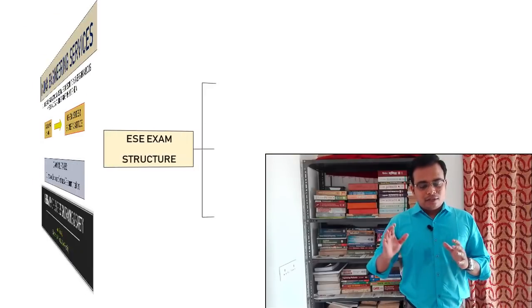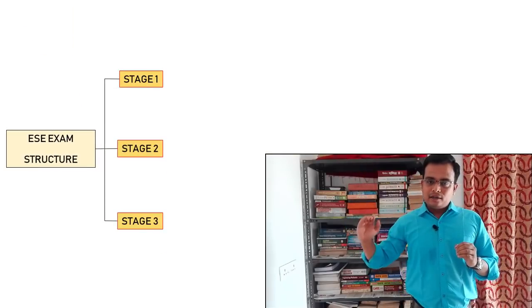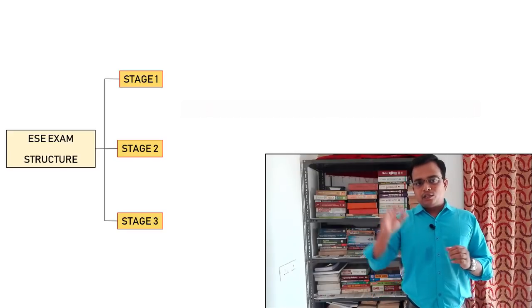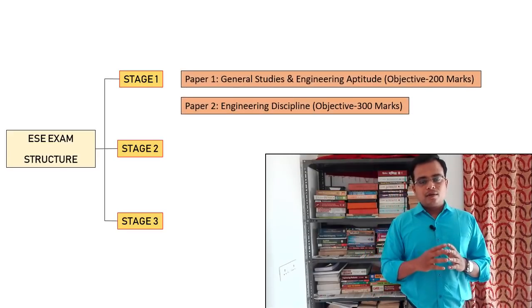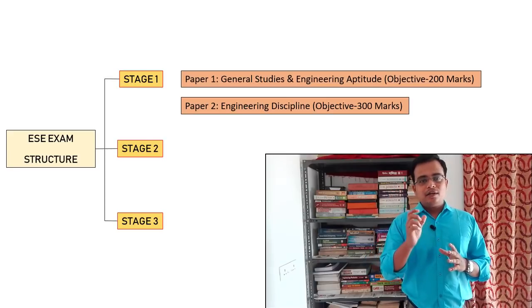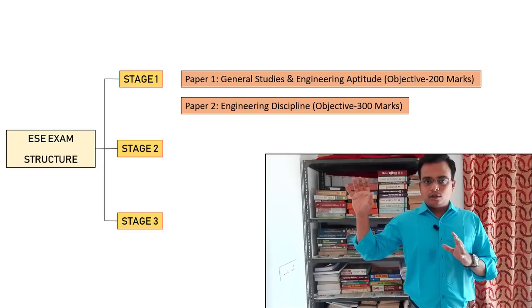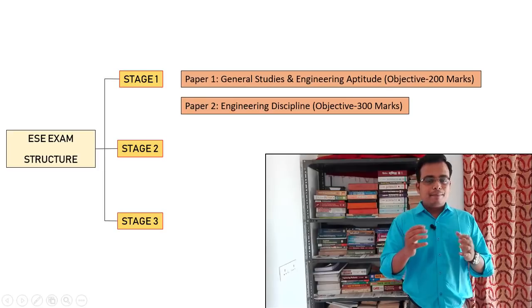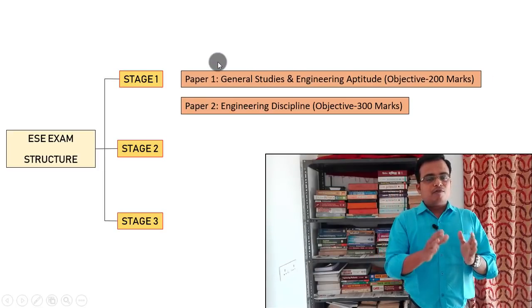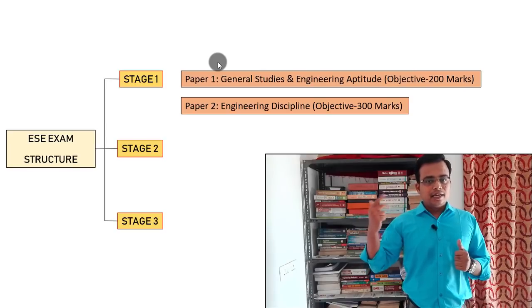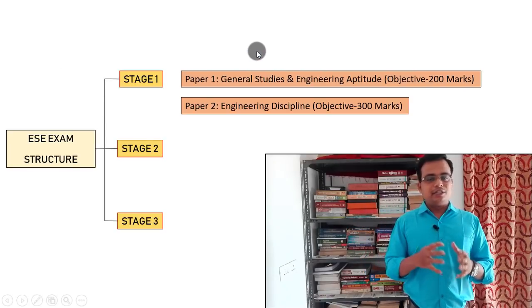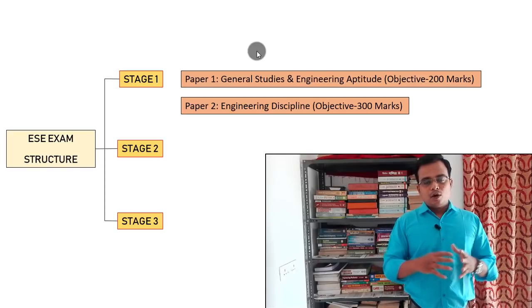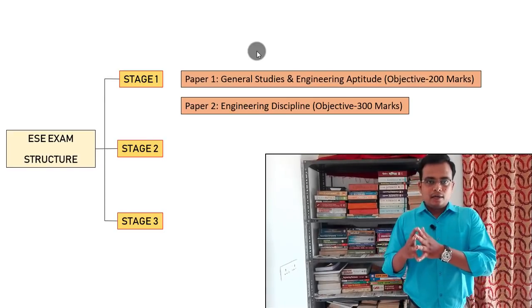Let me give you a brief idea of the structure. This examination has three stages: Stage 1, Stage 2, and Stage 3. In Stage 1, there are two papers — Paper 1 and Paper 2. Paper 1 covers general studies and engineering aptitude, which is the prelims. Paper 2 is branch specific. Paper 1 is common for all branches: civil, mechanical, electrical, and electronics and communication engineering. My focus right now is on Paper 1.